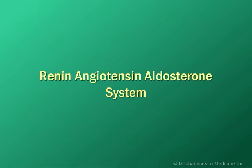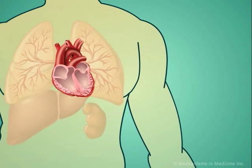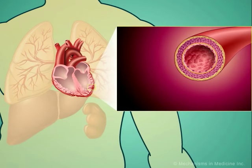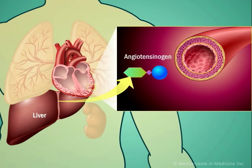The renin-angiotensin-aldosterone system is a classic endocrine system that helps to regulate long-term blood pressure and extracellular volume in the body. The system begins with the release of angiotensinogen into circulation by the liver. This may be in response to low blood pressure and adverse changes in sodium concentrations.